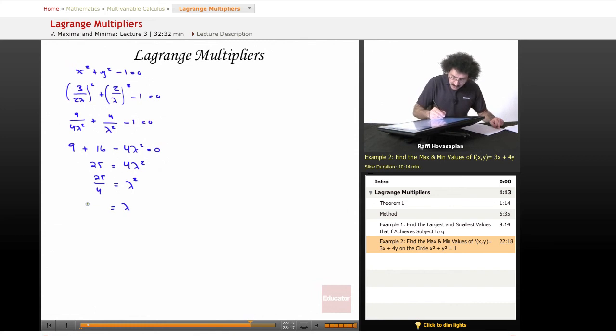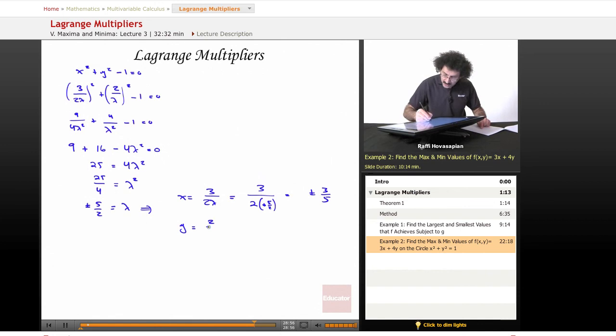Lambda squared equals 25 over 4. Therefore, lambda equals plus or minus 5 over 2. So we found lambda. Now that we found lambda, x equals 3 over 2 lambda. When I put that in there, that's going to end up equaling 3 over 2 times plus or minus 5 halves, so it's going to end up equaling plus or minus 3 fifths. Now, y equals 2 over lambda, which equals 2 over plus or minus 5 halves, which equals plus or minus 4 fifths.